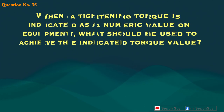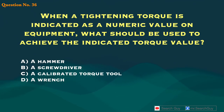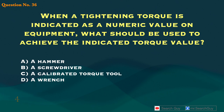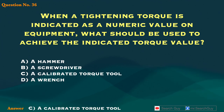Question 36. When a tightening torque is indicated as a numeric value on equipment, what should be used to achieve the indicated torque value? A. Hammer. B. Screwdriver. C. Calibrated torque tool. D. Wrench. Answer: C. A calibrated torque tool.